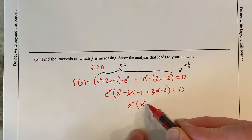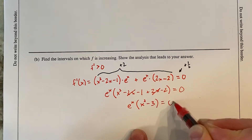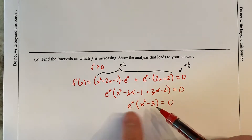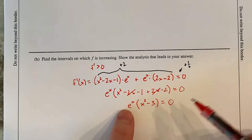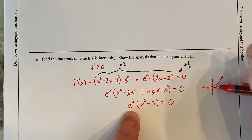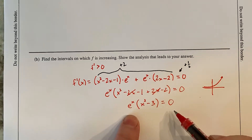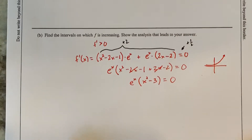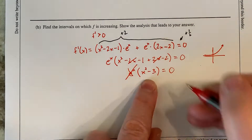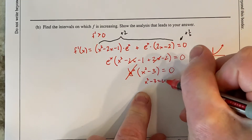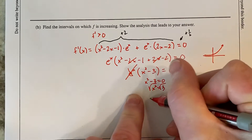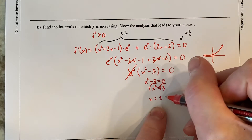Exponential functions never equal zero, so e to the x gives no solution — ignore it. Setting x squared minus 3 equal to zero, adding 3 over and square rooting, I get x equals plus or minus root 3. So I mark negative root 3 and positive root 3 on a number line to check where the derivative is positive.